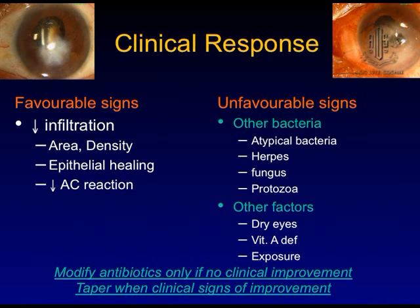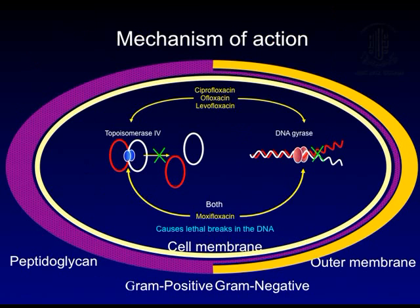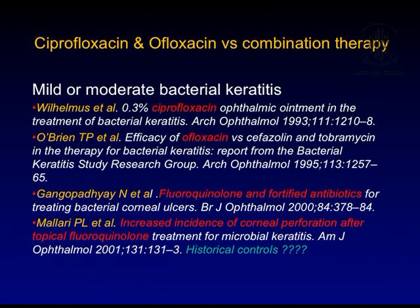Fourth-generation fluoroquinolones act on both topoisomerase IV and DNA gyrase, causing lethal breaks in DNA. They are effective against gram-positive and gram-negative bacteria, including Staph, Enterobacteriaceae, H. influenzae, ciprofloxacin-resistant staph aureus, and mycobacteria. Clinical trials comparing monotherapy with combination therapy show equivalent results, except one retrospective study by Hugh Taylor's group that found more perforations with ofloxacin — though this used historical controls and results should be taken with caution.